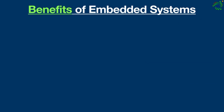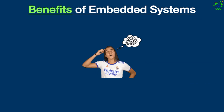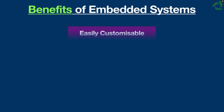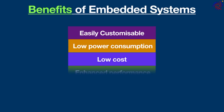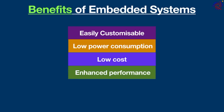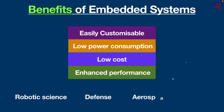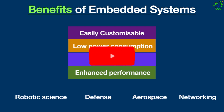Now you must be thinking about the benefits of using embedded systems. These include: easily customizable, low power consumption, low cost, enhanced performance, and more. So in a nutshell, embedded systems can be used in a variety of ways — for example, in robotics, defense, aerospace, networking, and the list goes on. That brings me to the end of my video. Thanks for watching — please subscribe for more tech videos.